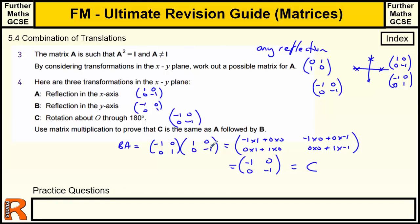So that covers combining transformations. There's not much more they can ask about these — once you've done four or five questions they all start to look the same. The key idea is that transformations are determined by what happens to those two unit square points, and once you've got that it becomes fairly straightforward.